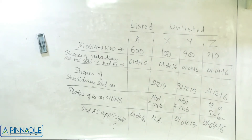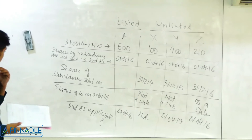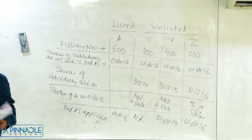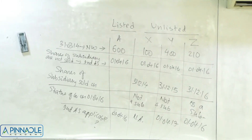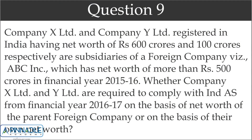This question is from the RTP. Question 9: Companies X and Y are registered in India and are subsidiaries of a foreign company ABC Incorporation, which has a net worth of more than 500 crores. Company X has a net worth of 600 crores and Company Y has a net worth of 100 crores. The question is whether X and Y must comply with Ind AS based on the parent's net worth or their own net worth.